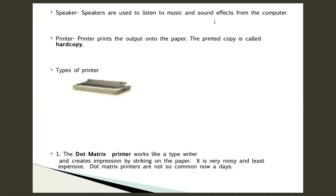The printer takes prints for us, and the printed paper copy is called a hard copy. Suppose I have drawn a beautiful picture in MS Paint — that is my soft copy when it is on the monitor screen. But as you take out the print of that soft copy on paper, it becomes a hard copy.